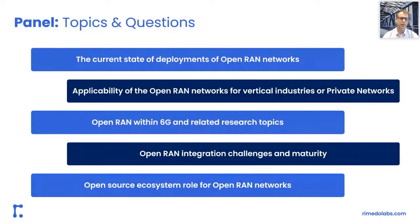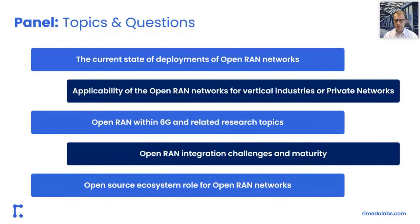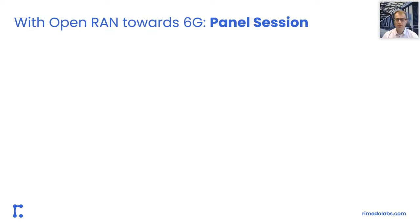I'd like to conclude the background setup and speak about the topics we'll cover today. We'll start with the current state of deployments and trials within Open RAN networks. The second topic is the applicability of Open RAN in vertical industries and private networks. Then we'll speak about Open RAN within 6G — related research topics and whether Open RAN fits into 6G at all. We'll also cover integration challenges and maturity, and how open source fits into Open RAN networks.